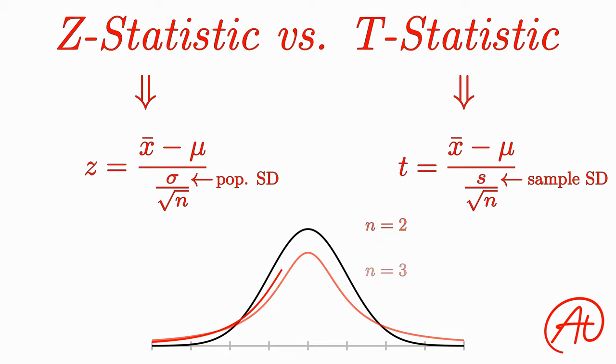However, as you take a bigger and bigger sample size, you can be more and more confident that your sample standard deviation is correct, and as a result, your distribution will get closer and closer to the normal distribution.